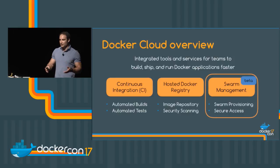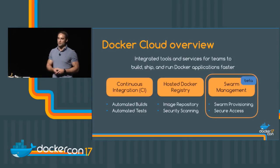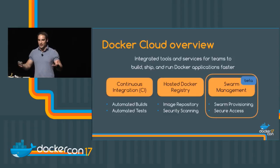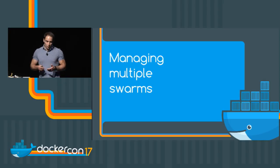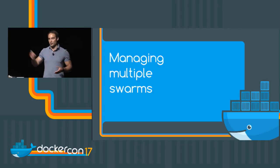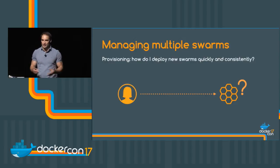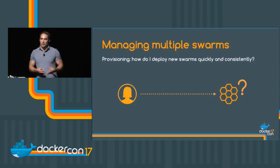Now that I have all my images tested and built in Docker Cloud, I have to deploy them somewhere. This is where the new swarm management feature comes in — Docker Cloud will help you provision and manage multiple swarms. What are the typical challenges a developer faces when trying to move from their laptop to a remote swarm? The first one is: how do I provision a swarm? I just have my laptop with Docker for Mac. How do I get a swarm deployed quickly and securely?